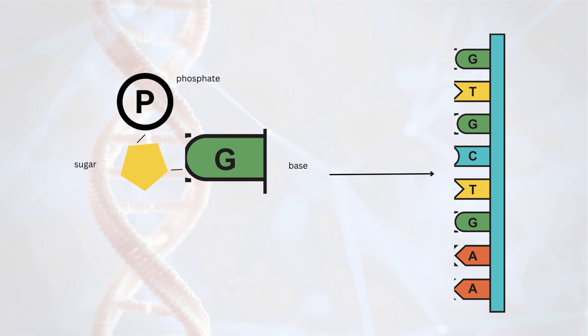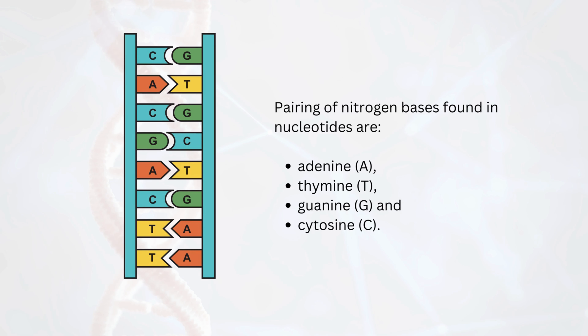What are the series of nucleotides in DNA? Nucleic acid sequence. The possible letters are A, C, G, and T, representing the four nucleotide bases of a DNA strand — adenine, cytosine, guanine, thymine — covalently linked to a phosphodiester backbone. The four types of nitrogen bases found in nucleotides are adenine (A), thymine (T), guanine (G), and cytosine (C).